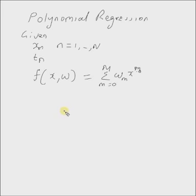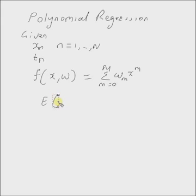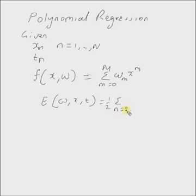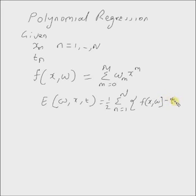Now the optimization problem can be defined as follows. For any optimization problem we initially need a cost function. In this case we use the quadratic error function as our cost function, which is defined as: E(w, x, t) equals one half times the summation from n equals 1 to N of (f(x, w) minus t_n) squared. Our goal is to minimize this quadratic error function.